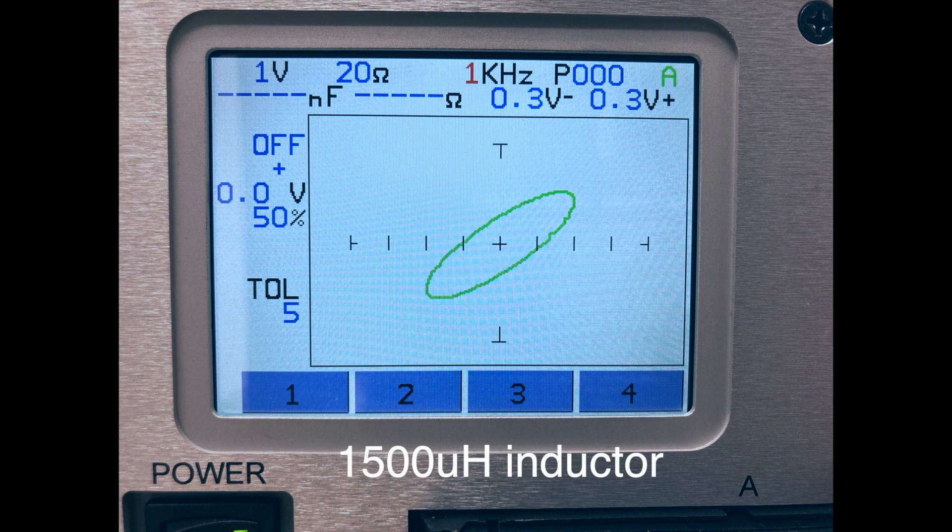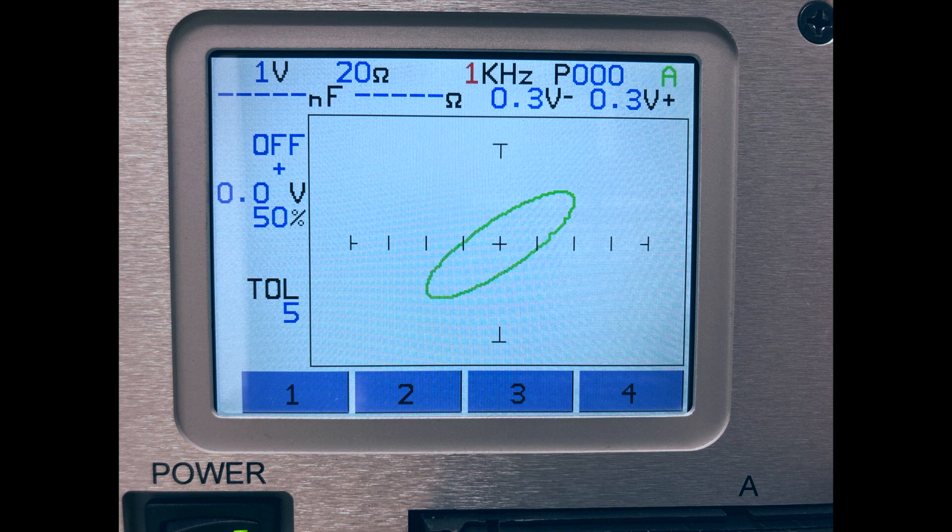Here is the signature of a 1500 µH inductor using the 20 ohm resistance and the 1 kHz frequency ranges. The ellipse width is a factor of the component value. The signature angle is a result of the wire resistance.